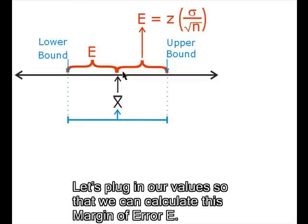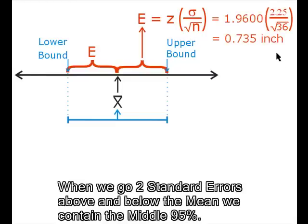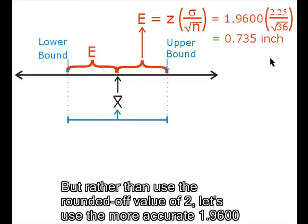Let's plug in our values so that we can calculate this margin of error E. We have to go two standard errors above and below the mean to contain the middle 95%. But rather than use the round off value of 2, let's use the more accurate 1.9600.